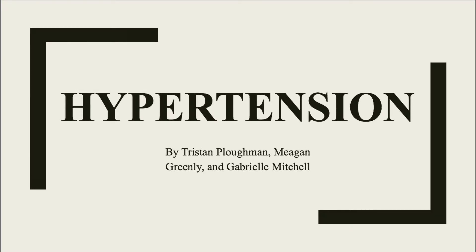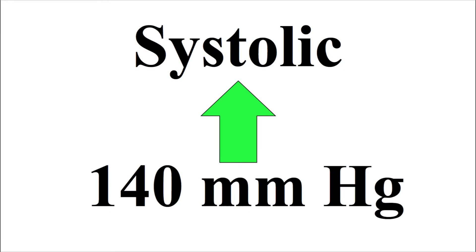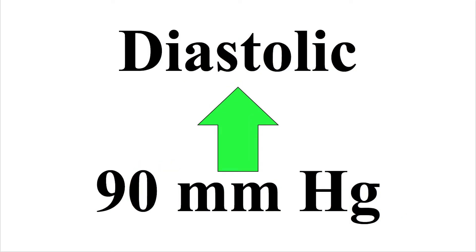Hypertension is blood pressure above the normal range, with systolic greater than 140 millimeters of mercury or diastolic greater than 90 millimeters of mercury.